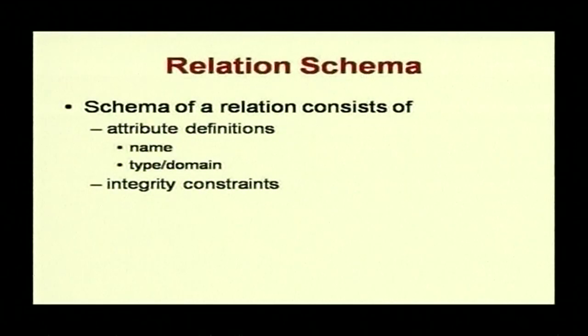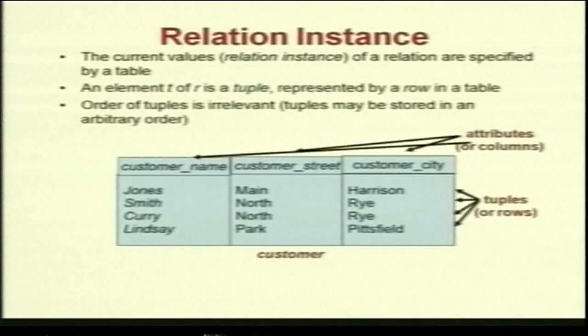A relation schema is formally defined with domains d1, d2 to dn; a relation r is a subset of d1 × d2 × ... × dn. The relation can have a set of n-tuples (a1, a2, ..., an), where each ai must belong to domain di. A relation schema consists of attribute definitions — name, type, domain — and also integrity constraints.